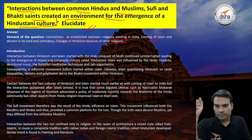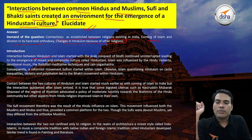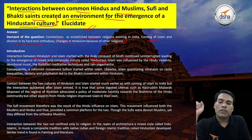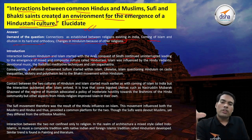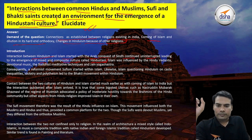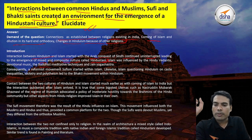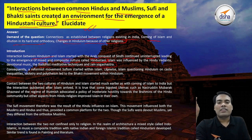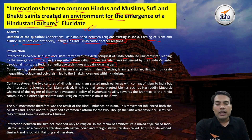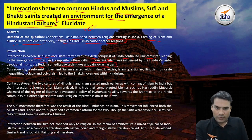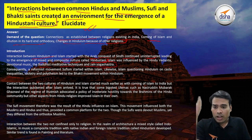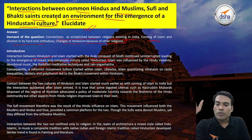Interaction between Hinduism and Islam started with the Arab conquest of Sindh and continued uninterrupted, leading to the emergence of a mixed and composite culture called Hindustani. Islam was influenced by Hindu Vedanta, devotional music, Buddhist meditative techniques, and Jain Yoga Shastra. The rulers who conquered India had their origins in the Saudi Arabian part, while a small group also had origins in Persia.